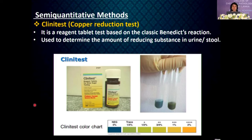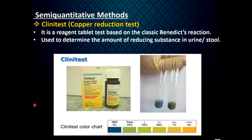The Clinitest is a copper reduction test — a reagent tablet test based on the classic Benedict reaction. It is used to determine the amount of reducing substance in urine and stools. After the test, the colour is compared against a standard colour chart and the result is interpreted.